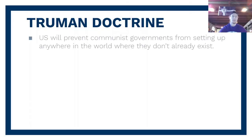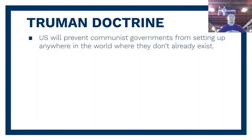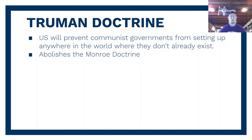The first example is the Truman Doctrine. President Harry S. Truman declared that the U.S. will prevent communist governments from setting up anywhere in the world where they don't already exist. Starting that day, no more communist governments being set up — if someone tries to infiltrate an existing government and switch it to communism, the United States is going to step in. This abolishes the Monroe Doctrine, which essentially said the U.S. stays in the Western Hemisphere and Europe stays in the Eastern Hemisphere. The Truman Doctrine throws that out the window — the U.S. is now taking an active role in world politics based on the communist threat.